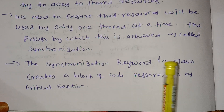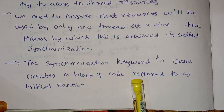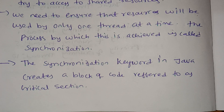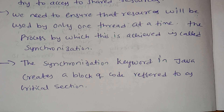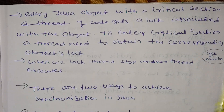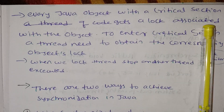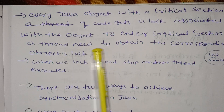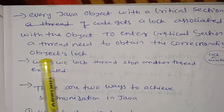The synchronized keyword in Java creates a block of code referred to as a critical section. The synchronized keyword is applied to the method, and it will be associated with an object and a thread. Every Java object with a critical section of code gets a lock associated with the object. To enter the critical section, a thread needs to obtain the object's lock.